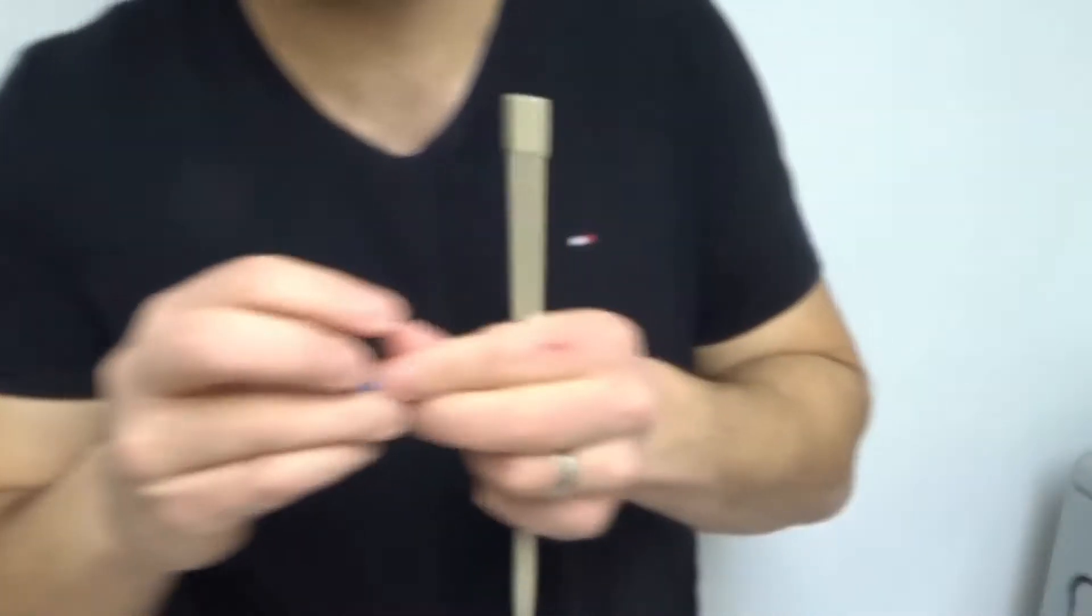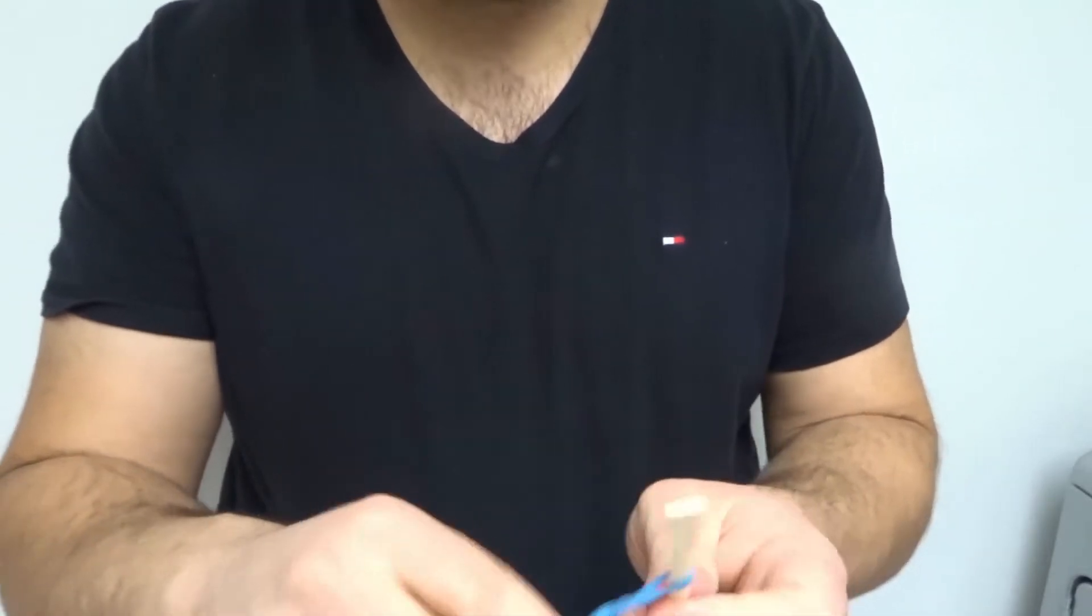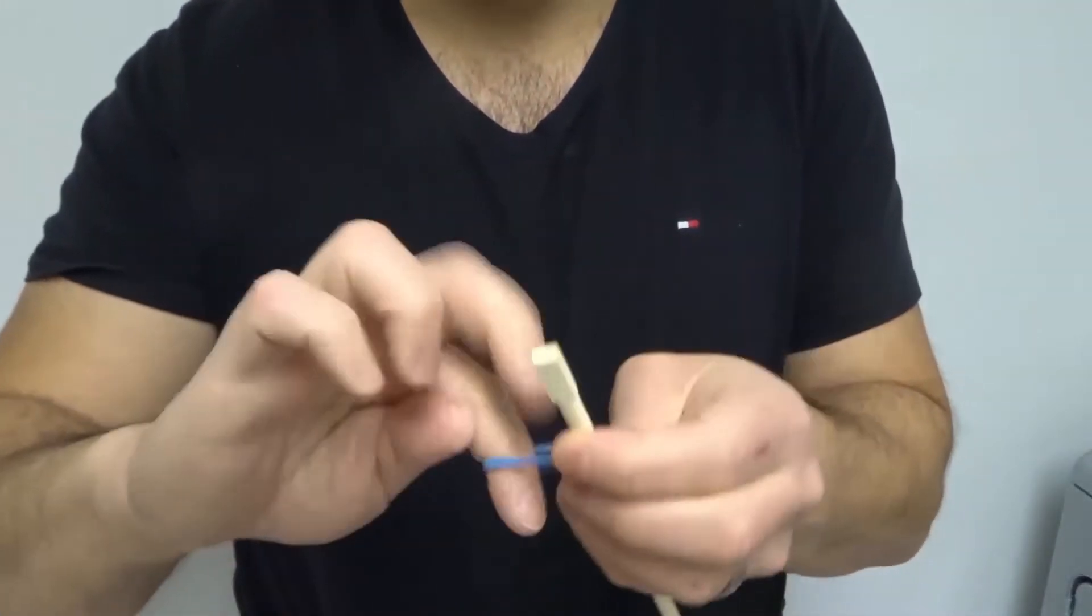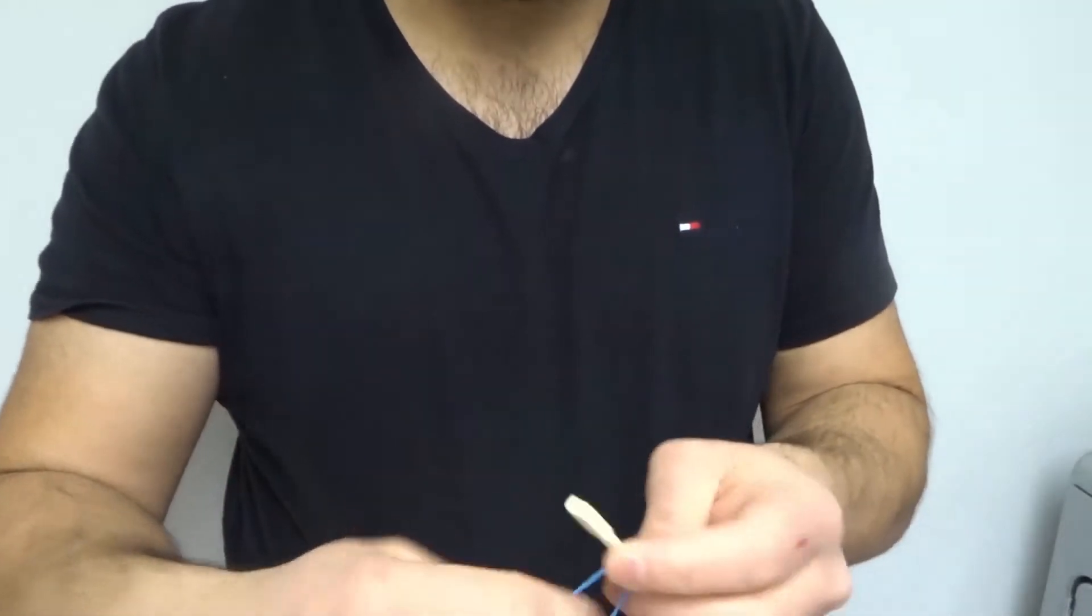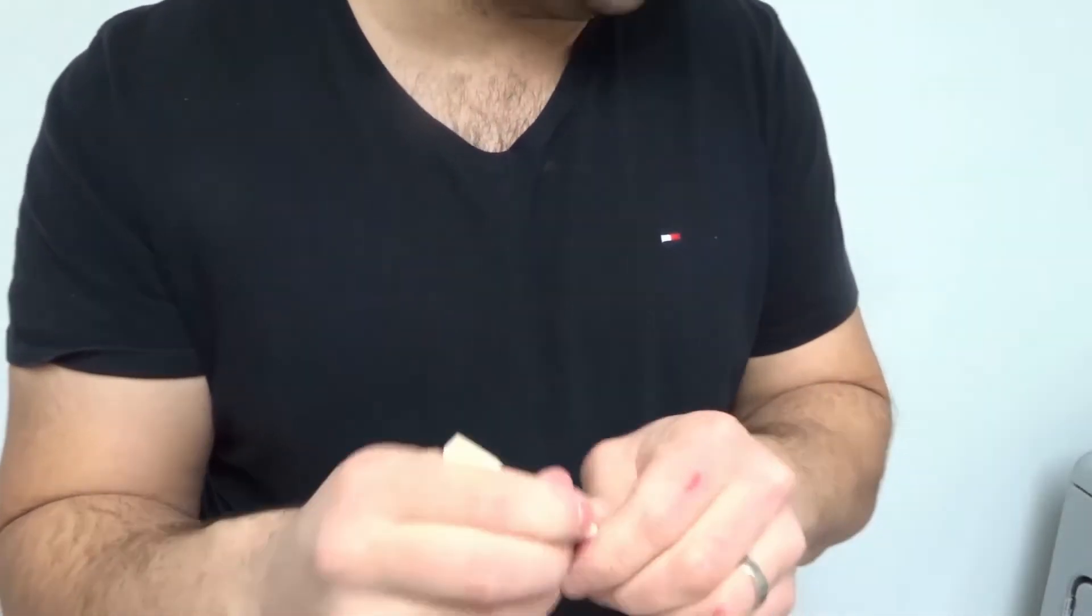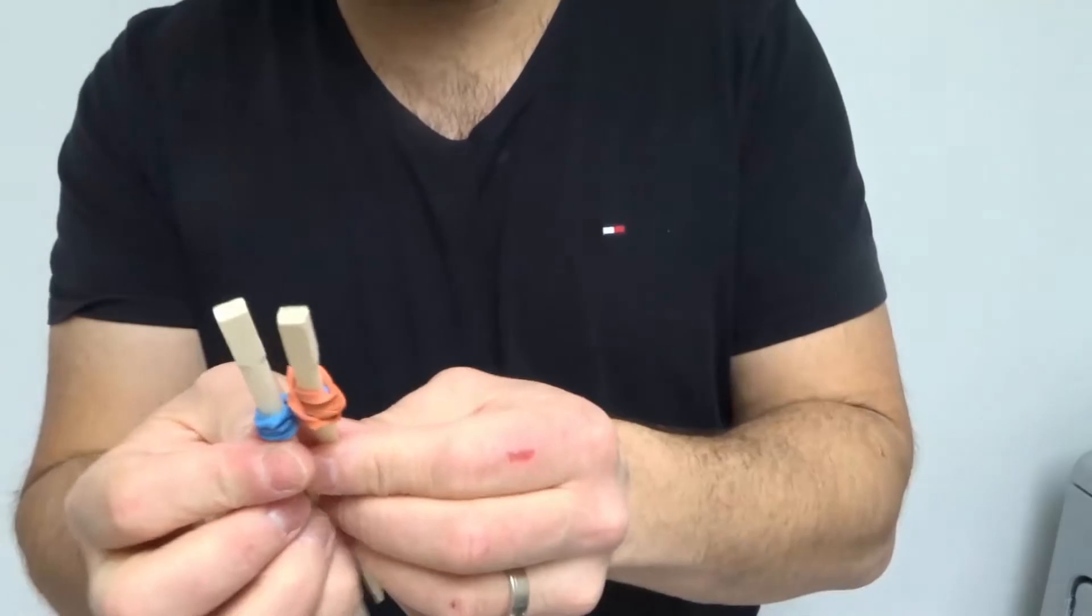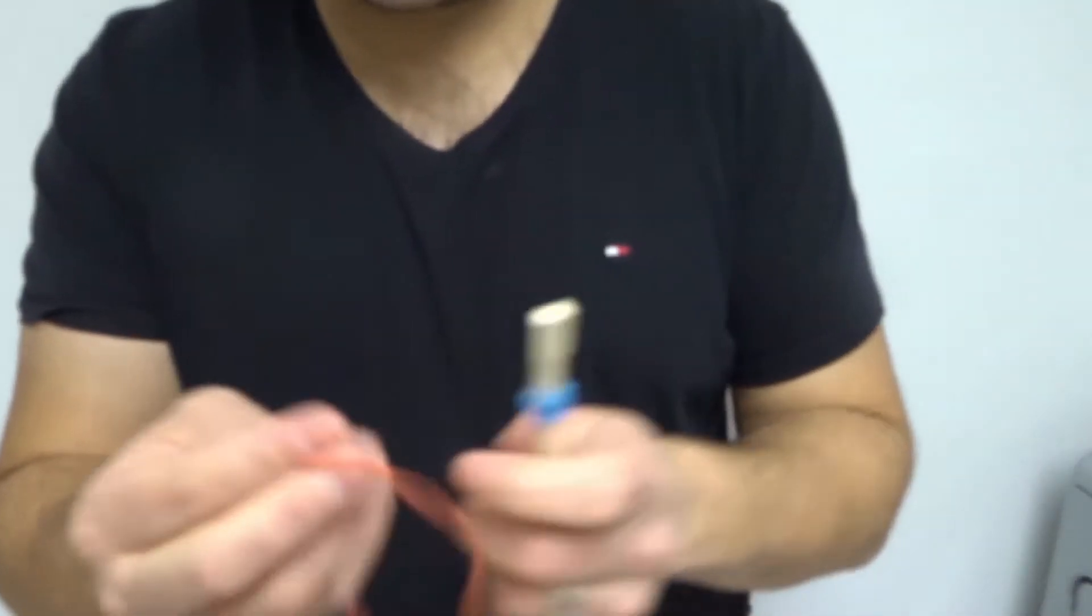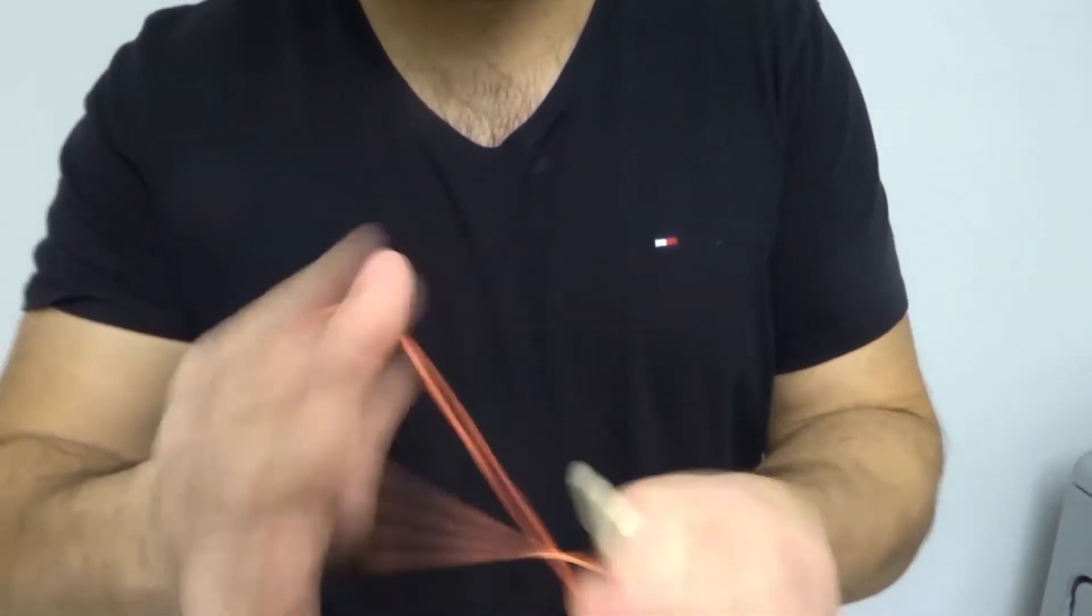I'm gonna do the exact same thing with the other chopstick over here, wrapping the rubber band around. Really easy to do. You want to try and get the rubber bands roughly in the same spot on each chopstick. As you can see, this one needs to go a little bit higher, just like that. Once again, I'm gonna get another rubber band and just wrap it around.